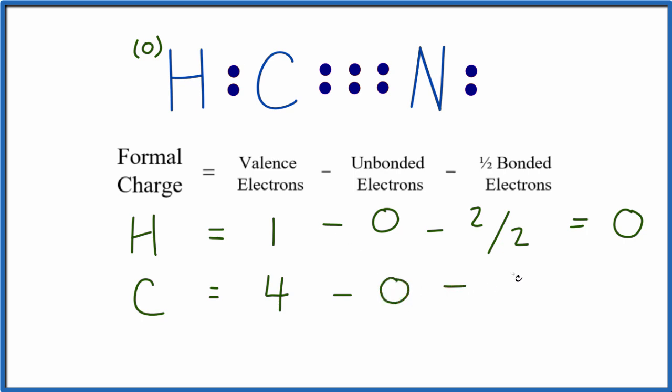Let's take half of the bonded valence electrons. We have two, four, six, eight. So four minus zero minus four, that's zero. The formal charge on the carbon is zero as well.